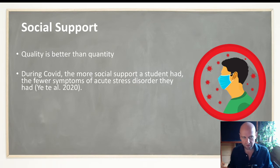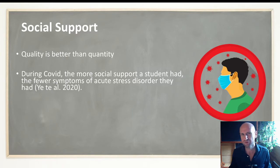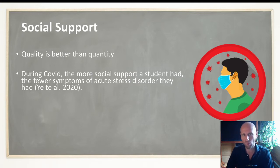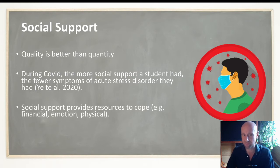Social support: quality is better than quantity — this is what is found across the literature. Interestingly, during COVID, they did a study on Chinese students and found the more social support a student had, the fewer symptoms they had of acute stress disorder. Acute stress disorder is PTSD that's lasted for less than 30 days; in order to get a PTSD diagnosis, you have to have the symptoms for longer than 30 days. Acute stress disorder is less than 30 days — it's a pretty controversial diagnosis, not always agreed upon, but that's what they used in this study.